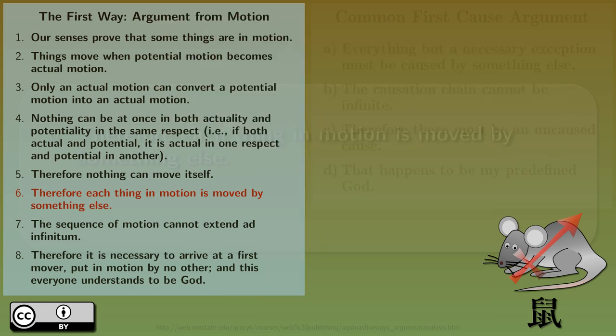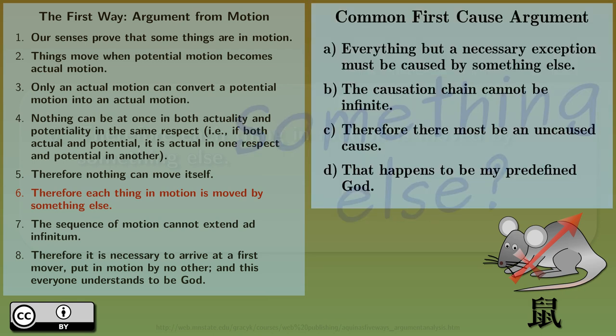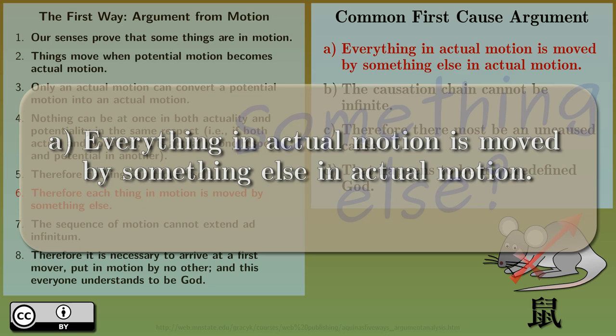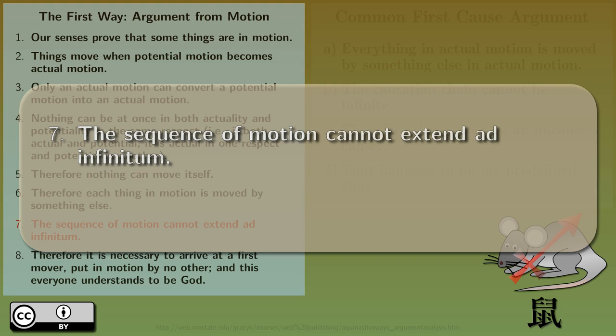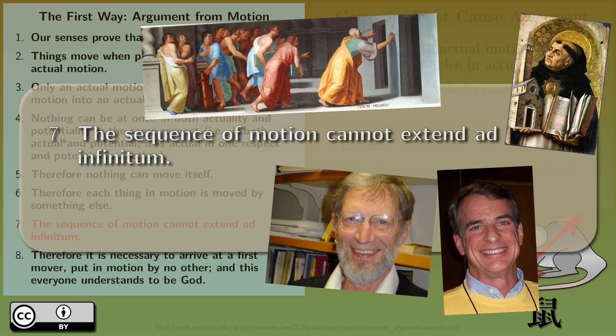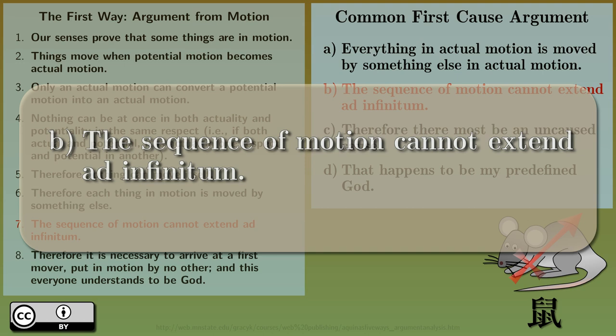Well, I probably missed the proper physical analogy for Aquinas' motion, for he meant something that is not one single property in modern physics. So let's waive that we can fix the argument. Everything in actual motion is moved by something else in actual motion, whatever actual motion means. The sequence of motion cannot extend ad infinitum. And let's waive that philosophers are right, and it is indeed impossible to have an infinite regression, or for Achilles to catch the turtle. So the only way B to be logically true is for A to have a necessary exception.